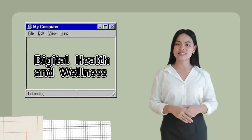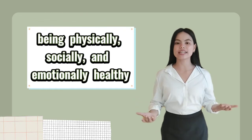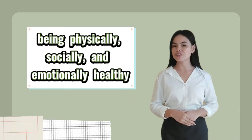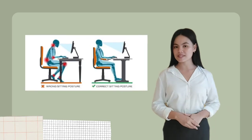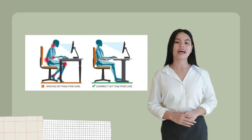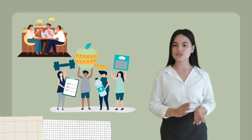Number seven is digital health and wellness. Digital wellness refers to being physically, socially, and emotionally healthy amidst our technologically centered world. We can do this by using proper hand placement and posture when keyboarding and balancing time spent using digital tools with time spent offline.